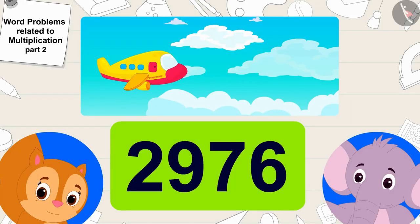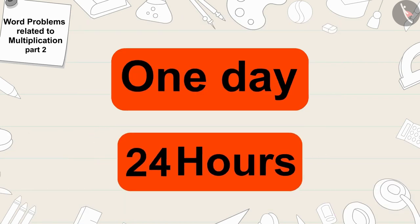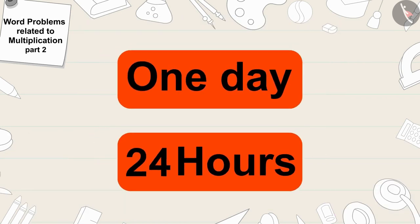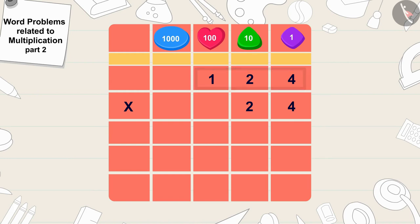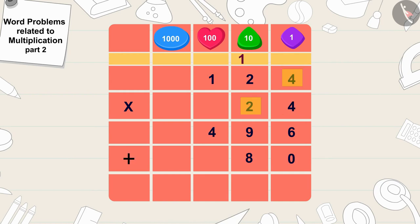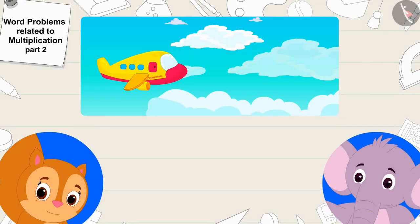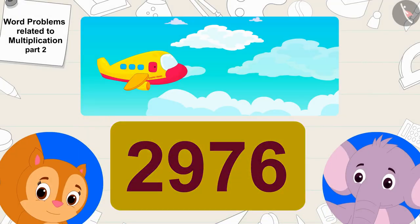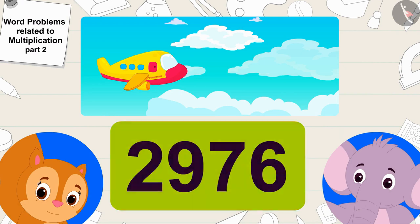Well done kids, your answer is absolutely correct! There are 24 hours in a day, so 124 times 24 — that is 2,976 people — travel from Champapur to Ulta Pulta Nagar in a day by the airplane service of Chappu Travels.